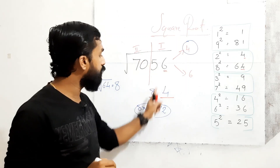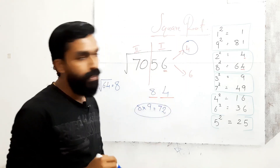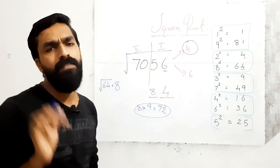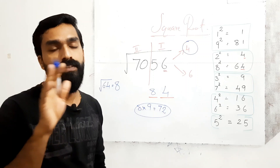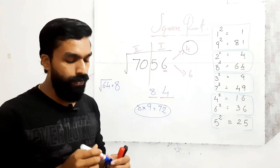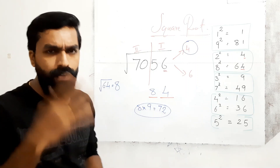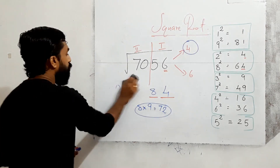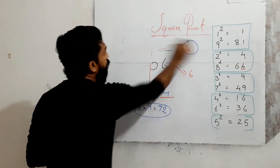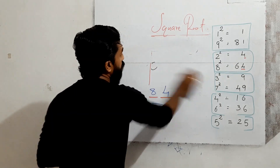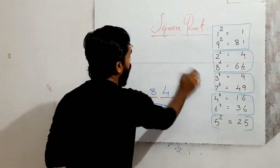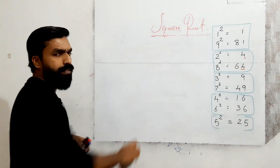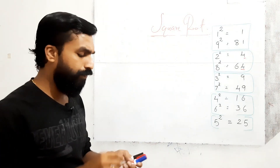Since 70 is smaller than 72, the smaller number option is 4. So write 84. The square root of 7056 is 84. This is the method to find the square root of a number. We can also do five-digit numbers.